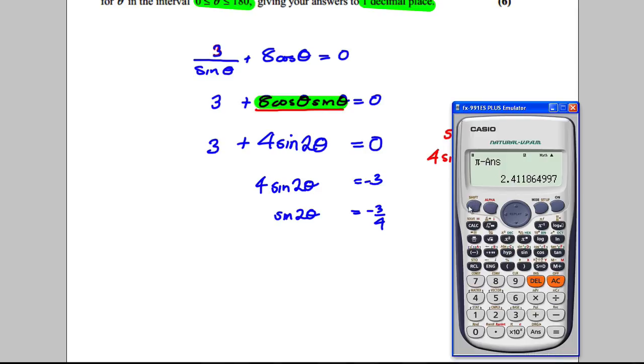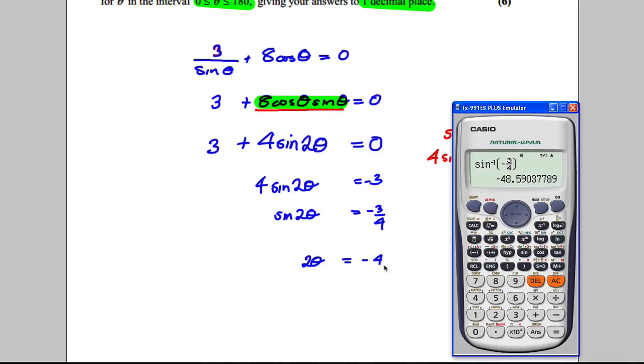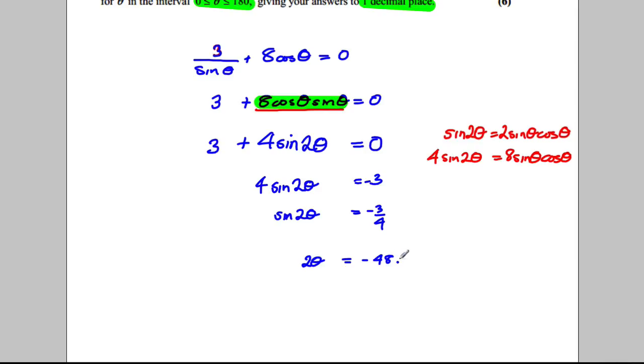Calculator out. Work out the principal value. This time we want our calculator in degrees mode. So change it to degrees mode. And what we're going to do here is we're going to say the inverse sine of negative 3 quarters, and it's negative 48.6 degrees. So 2θ would be negative 48.6 degrees.